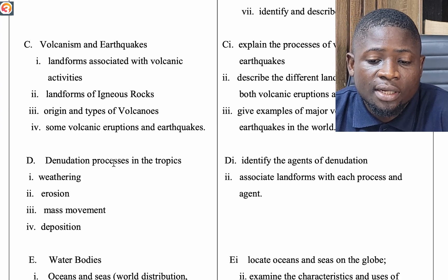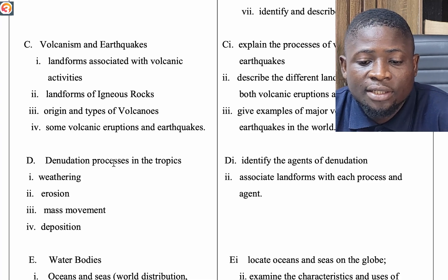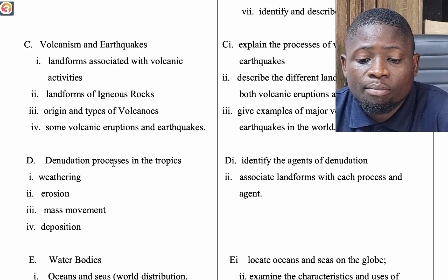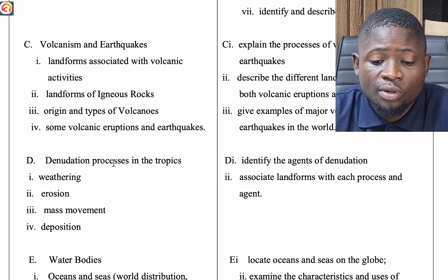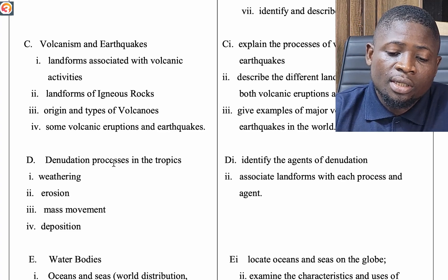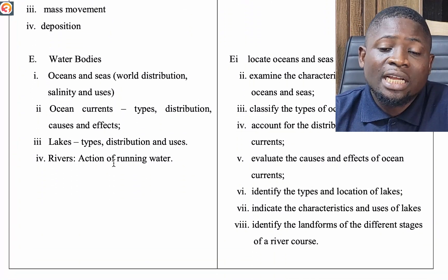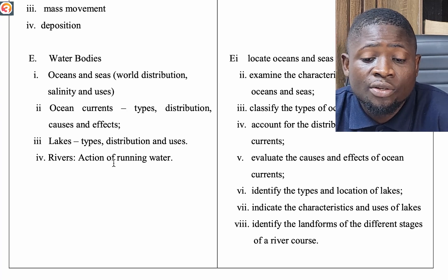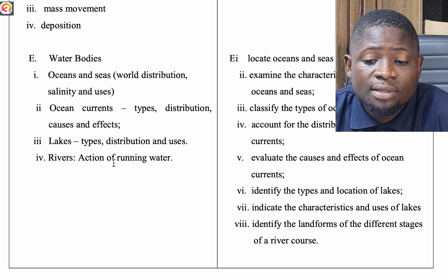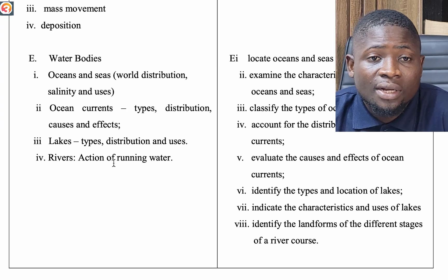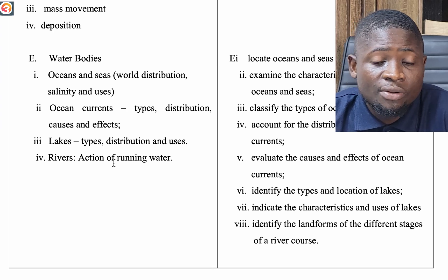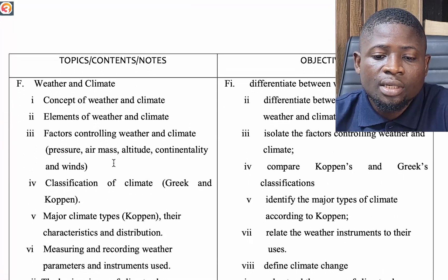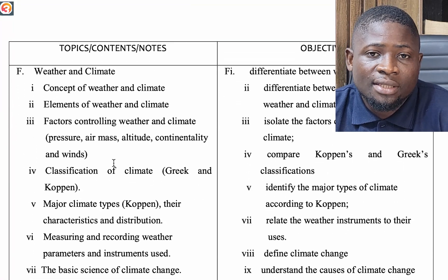We look at denudation processes in the tropics: weathering, erosion, mass movement, and deposition. Then water bodies — oceans and seas: water distribution, salinity and uses, ocean currents including types, distribution, causes and effects. We also look at lakes — types, distribution and uses — and rivers, including the action of running water.